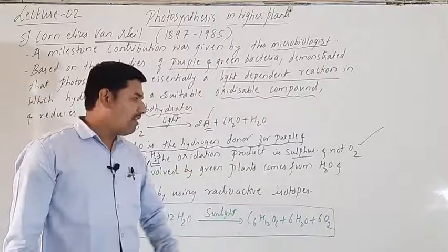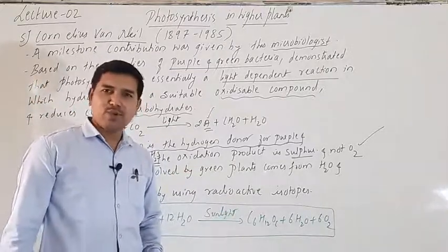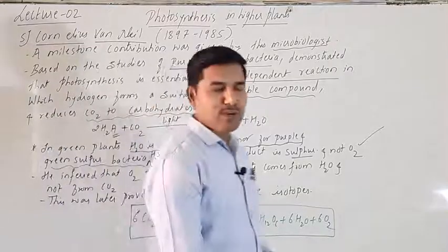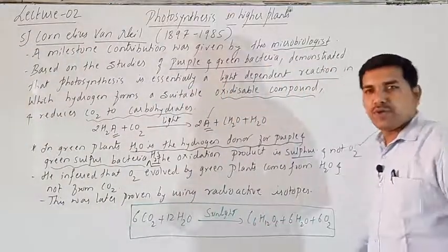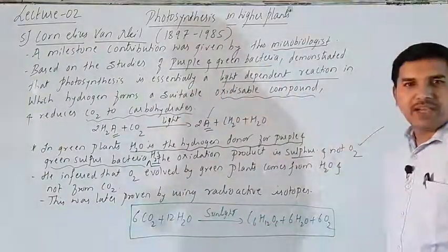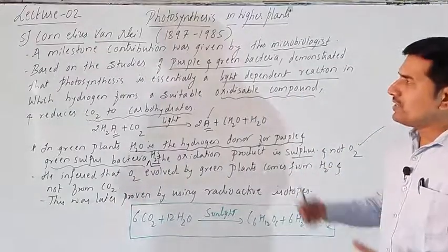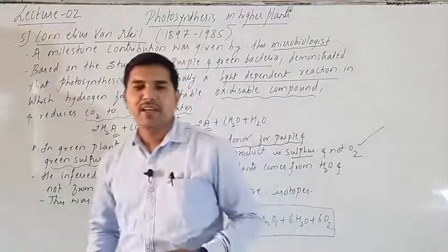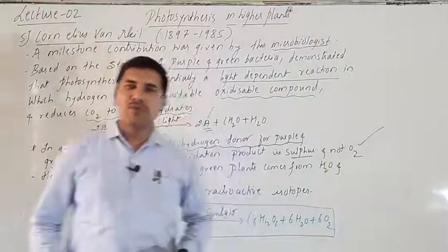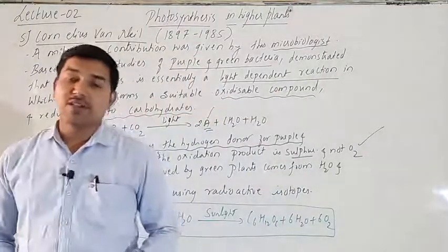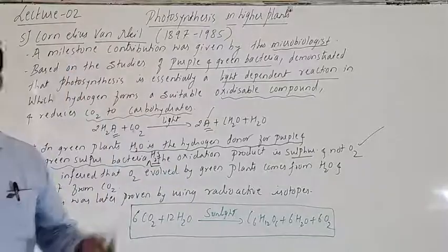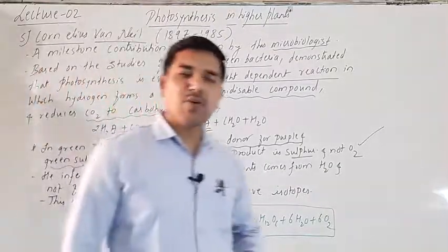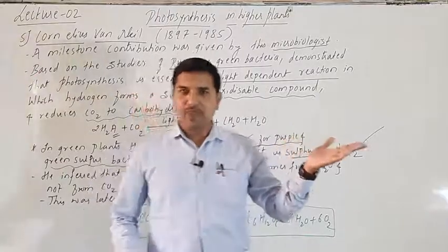This is the final equation for the process of photosynthesis. Pause the video and write all the characters. Now let us move on to the next part. For the process of photosynthesis, photosynthesis occurs in which structure of the plant? Photosynthesis generally occurs in the leaf. The leaf is a flattened structure having a dorsal and a ventral surface — a dorsoventrally flattened structure. The upper part is called the upper epidermis, and the lower part is called the lower epidermis.